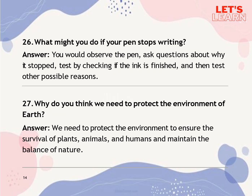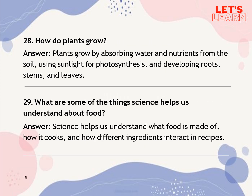Question 26: What might you do if your pen stops writing? You would observe the pen, ask questions about why it stopped, test by checking if the ink is finished and then test other possible reasons. Question 27: Why do you think we need to protect the environment of Earth? We need to protect the environment to ensure the survival of plants, animals and humans and maintain the balance of nature. Question 28: How do plants grow? Plants grow by absorbing water and nutrients from the soil, using sunlight for photosynthesis and developing roots, stems and leaves.